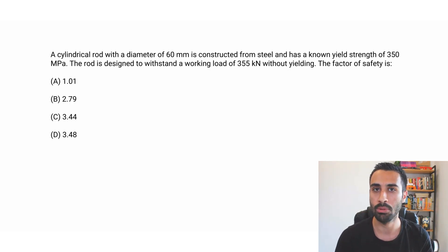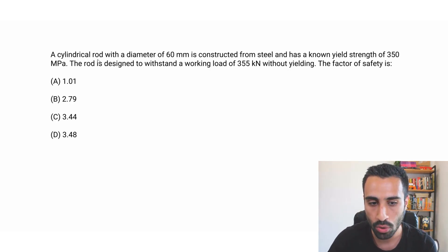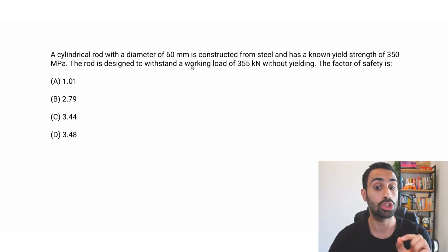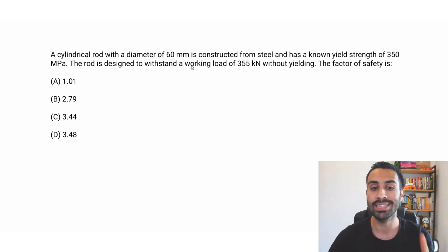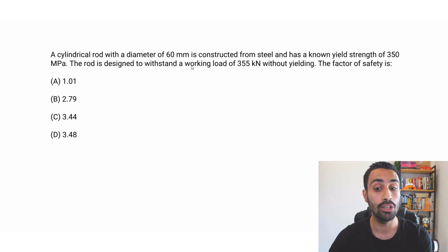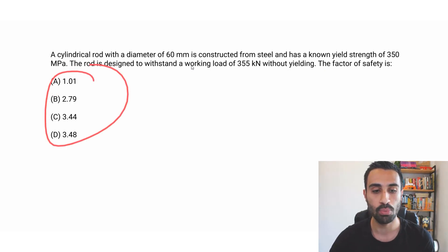Let's start by reading the problem statement. A cylindrical rod with a diameter of 60 mm is constructed from steel and has a known yield strength of 350 MPa. The rod is designed to withstand a working load of 355 kN without yielding. The factor of safety is what?